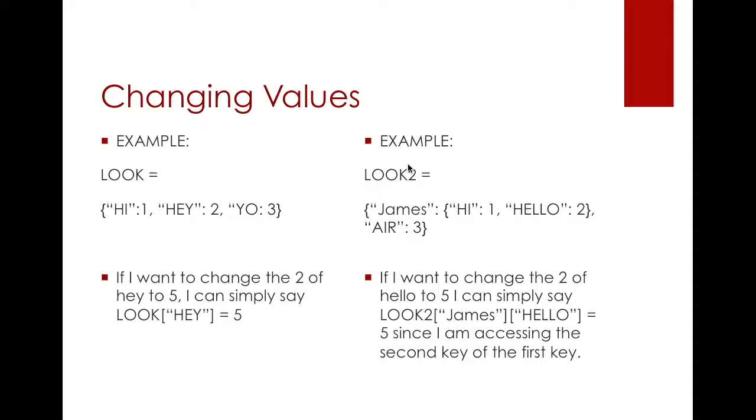Let's look at another example where we have a nested dictionary, which is variable look2. I have two keys which are James and air, but James's value is a dictionary. It's not like a number in our previous example of look.